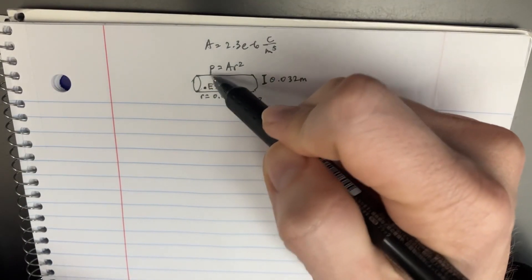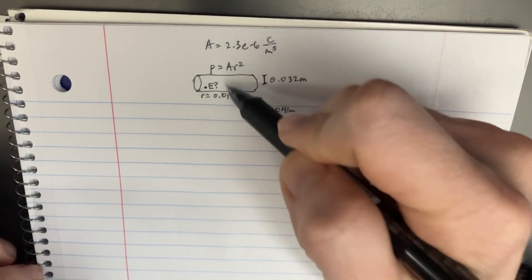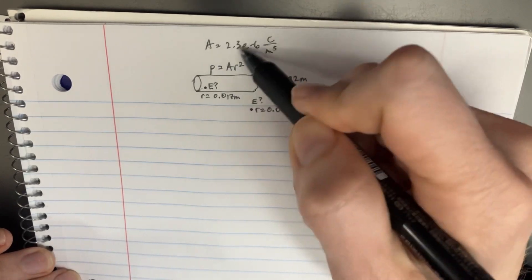So in this problem, we're given a cylinder with the volume density of Ar squared. That's just a constant.